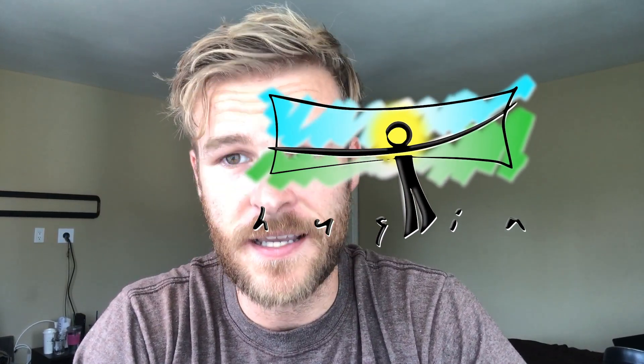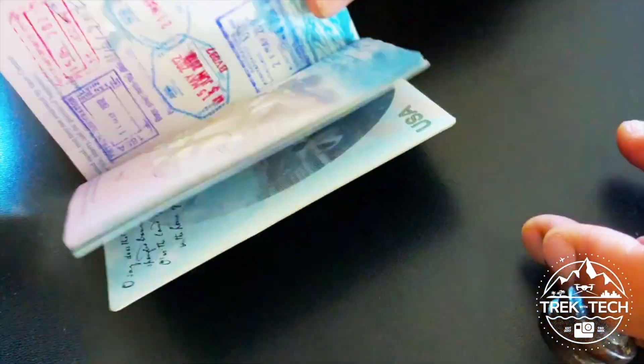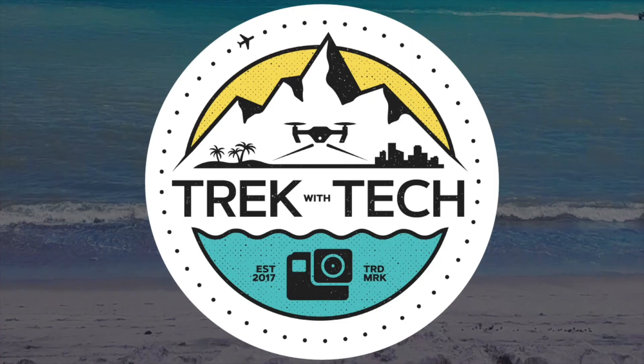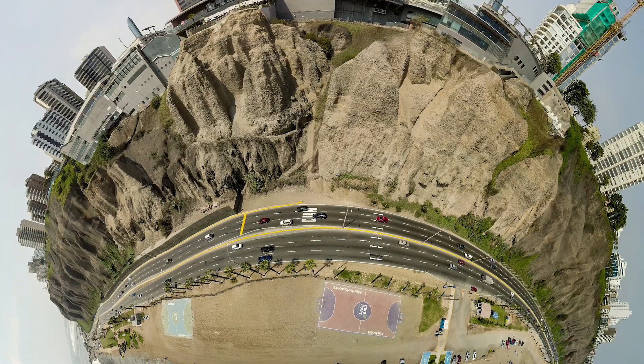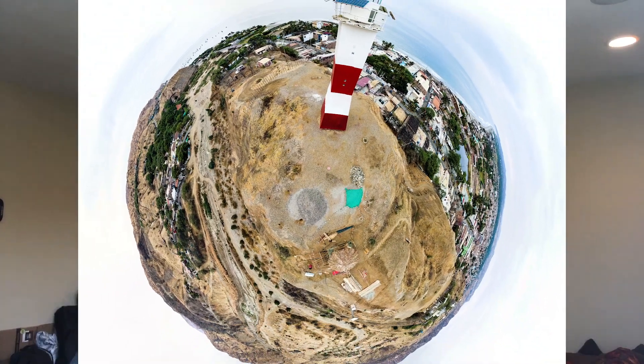How I usually do tiny planets is I'll put my camera in DNG mode, take those pictures, throw them in Lightroom, doll it up, add some auto-tuning, add some vibrancy, and then export as a JPEG from Lightroom. I then take those photos and put them in Hugin, which is a program we'll be using to stitch together our panoramic pictures into a tiny planet, and then I export the tiny planet out of Hugin.